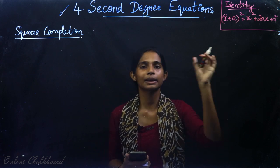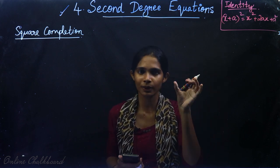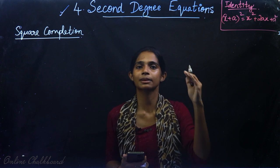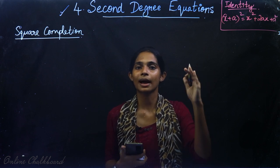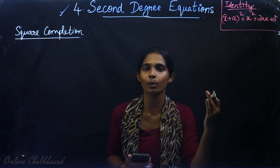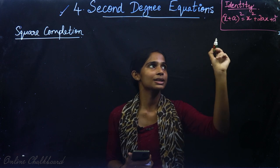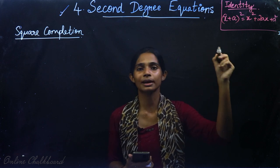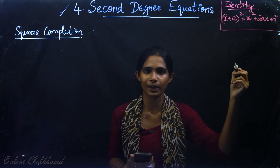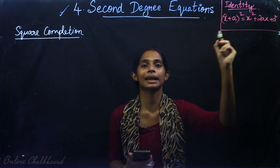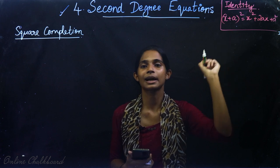We will learn how to solve 2nd degree equations using the completing the square method, using the identity: x² plus 2ax plus a² is nothing but (x + a) the whole square.